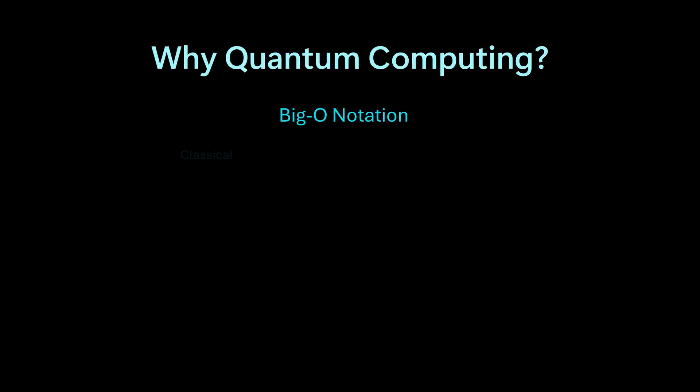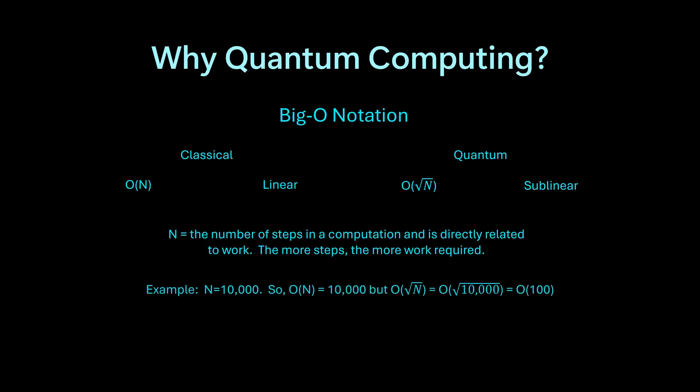Computing the steps necessary to complete a computer program is defined by something called Big O notation. This is simply a math tool which describes how a given algorithm scales as the amount of input data increases. More specifically, Big O notation expresses the upper bound or worst case scenario of an algorithm's growth rate as input size increases.